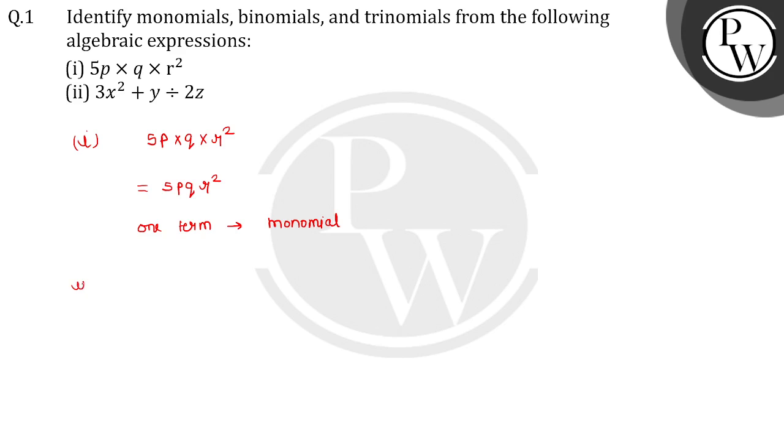Now let's see our second option. Second part, we have 3x square plus y divided by 2z. So one way is 3x square upon 2z plus y upon 2z.